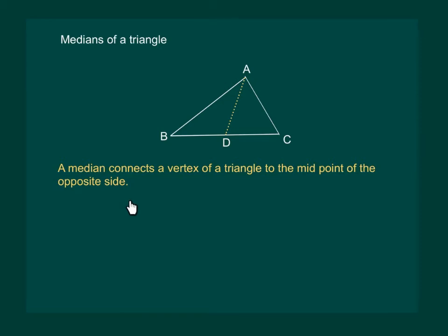That would mean that in a triangle we can have three medians. We can draw another median from B on AC and another one from C on AB.